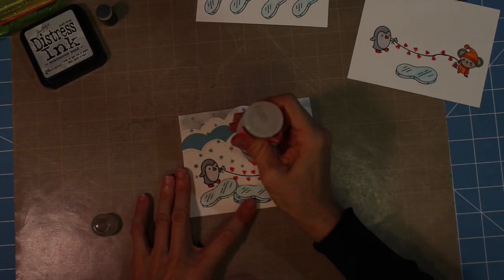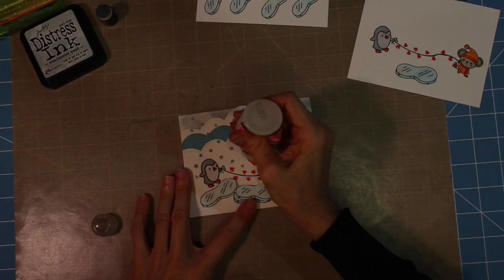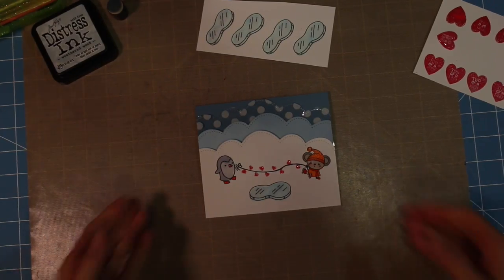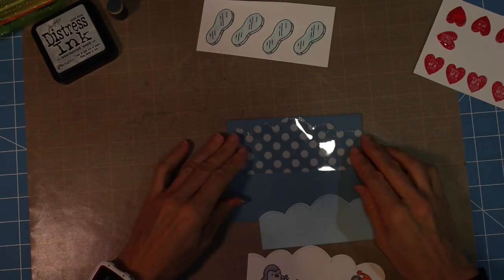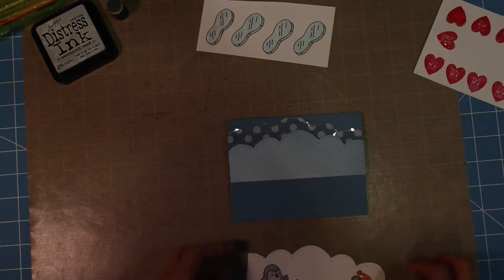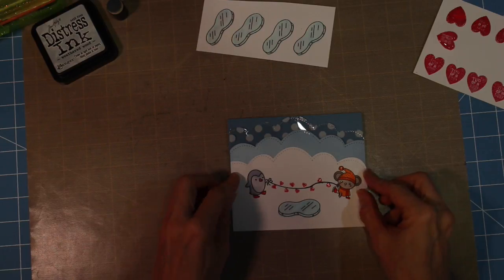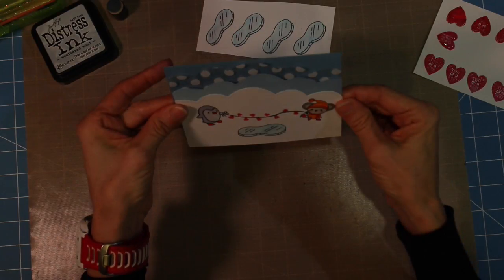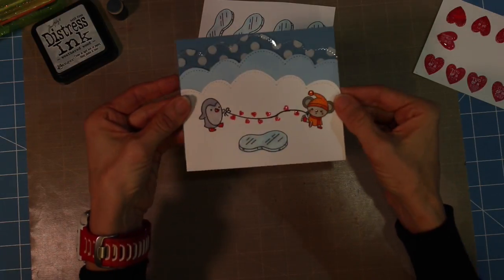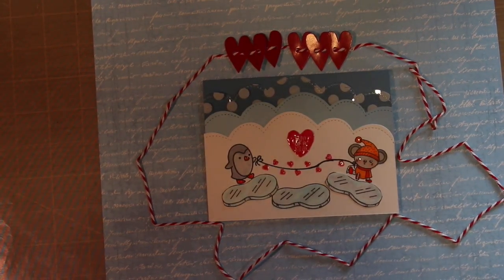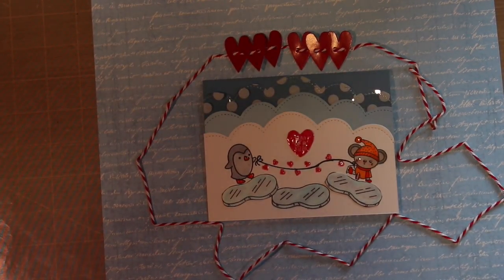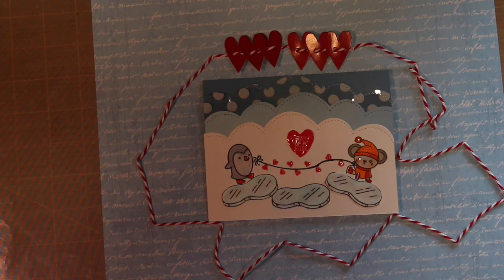For a second card, I use a piece of colored vellum that has some white dots on it and cut that out with my cloud die cut. That gives this card just a little different look, and then I add a little bit of string to the card as well.